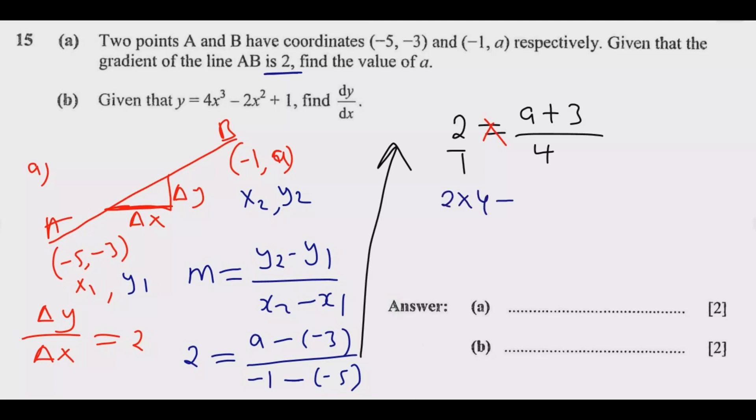Then you cross multiply. So it will be 2 × 4 = 1 × (a + 3). This equals 8 = a + 3, then we solve. So the answer here is a = 5. Once you do that, you get the two marks and we move to part (b).